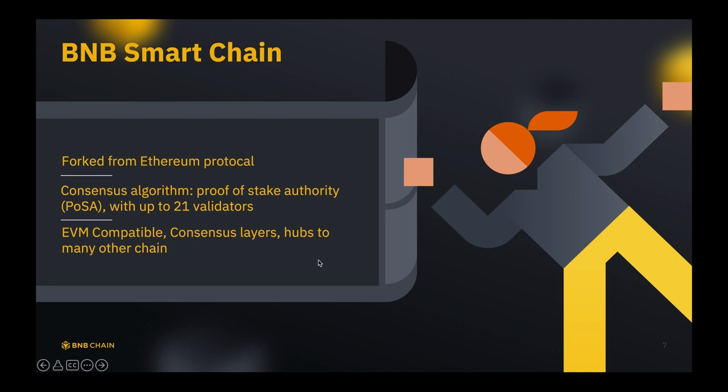BNB Smart Chain forked from the Ethereum protocol, which makes it Ethereum Virtual Machine compatible. That means many tools, programming languages, and ideas that work on the EVM also work on BNB. It also has consensus layers and hubs to many other chains.